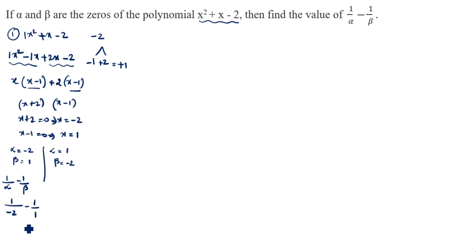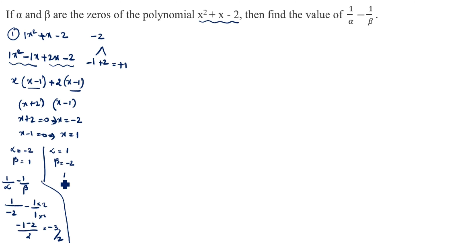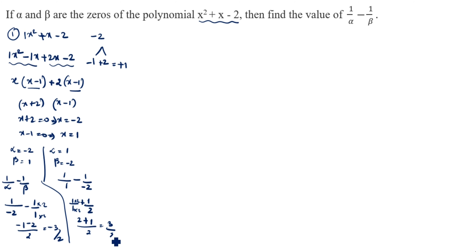Now substituting into 1 by alpha minus 1 by beta: with alpha equal to minus 2 and beta equal to 1, we get 1 by minus 2 minus 1 by 1. Taking 2 as the common denominator gives minus 1 minus 2 over 2, which equals minus 3 by 2. So 1 by alpha minus 1 by beta equals plus or minus 3 by 2. This is the answer for the first method.